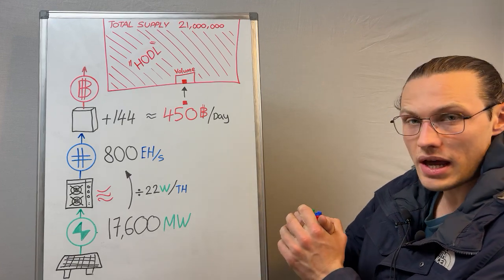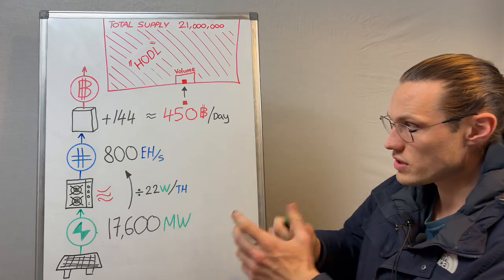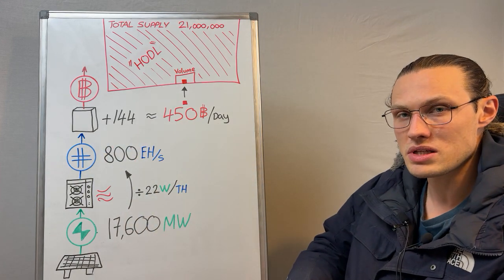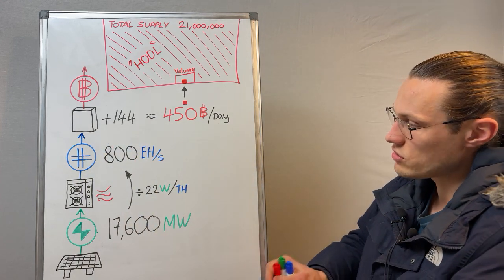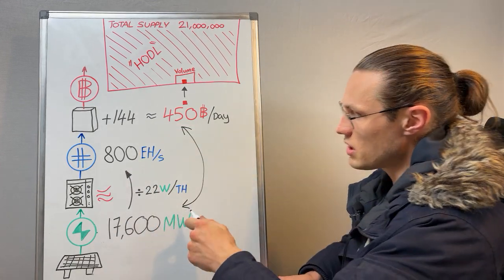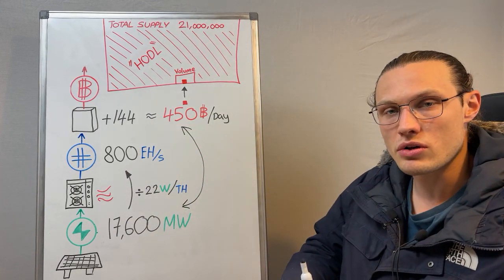And what is all of that hash power trying to find? It's trying to find the next block in the chain and capture some of this 450 Bitcoin per day. And what this does is create a direct pricing system between the worlds of energy production and monetary consumption on the internet.